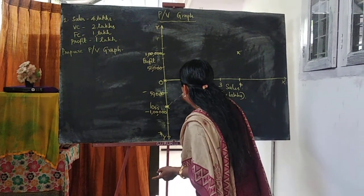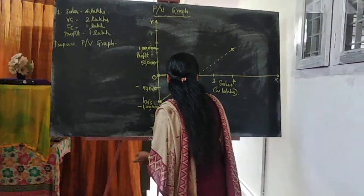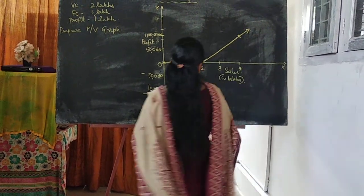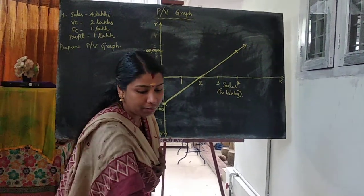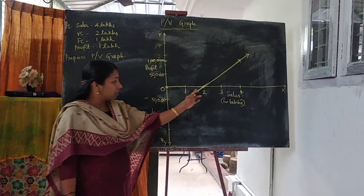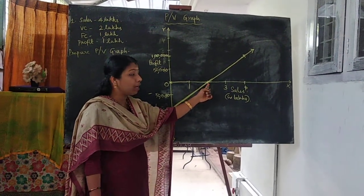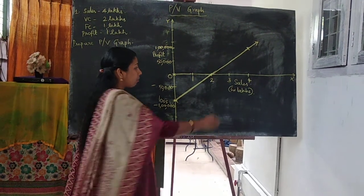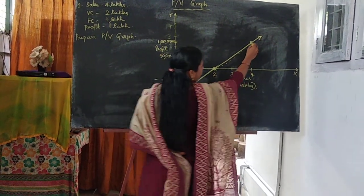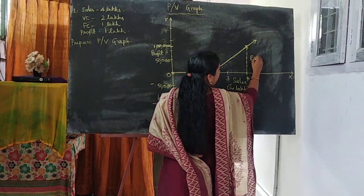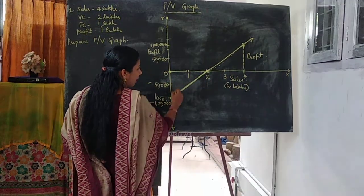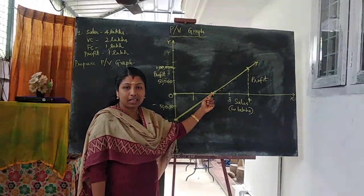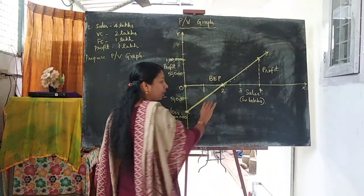Draw a line combining these 2 points. This is the PV profit line or PV graph. Please notice that at 2 lakh sales, this profit line intersects the sales line. Above the intersection indicates profit, and below indicates loss. At that point, profit and loss equal total sales — that is the break even point, where there is no profit and no loss.